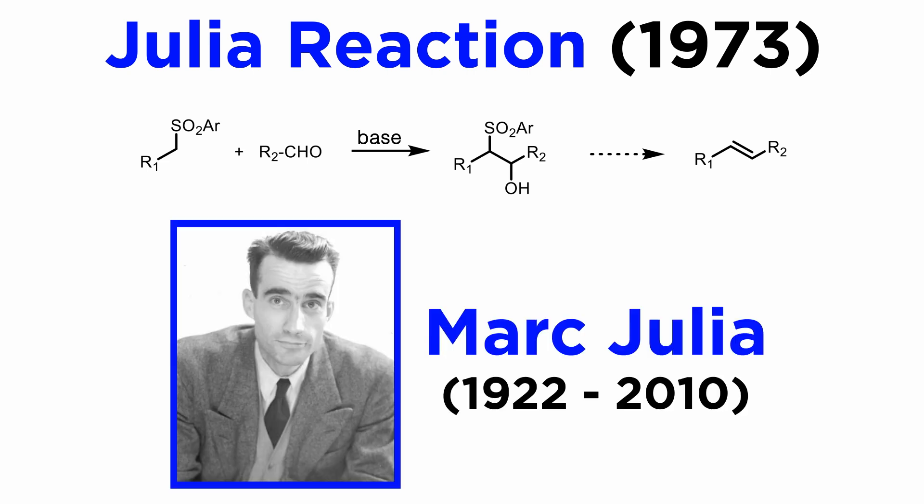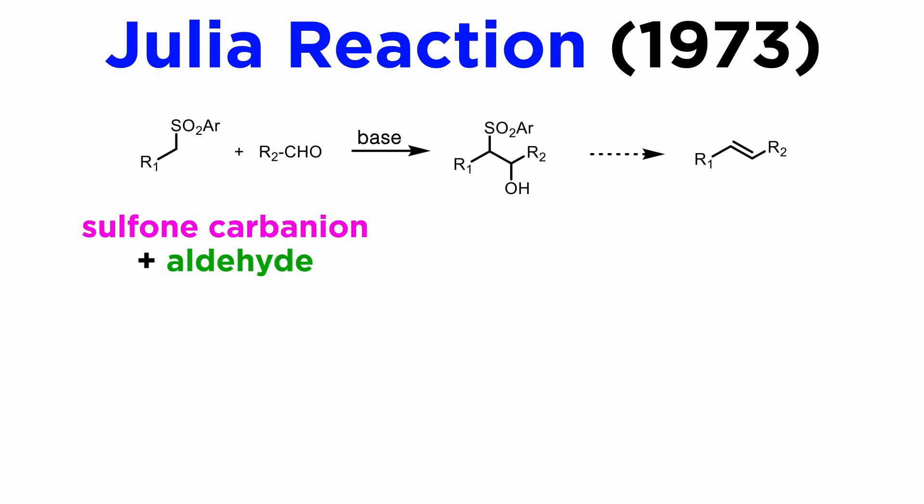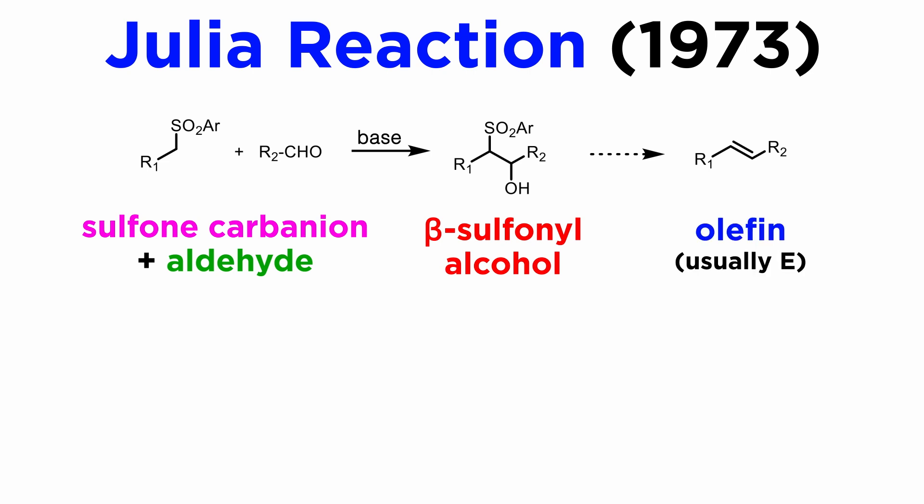The reaction was first reported by French chemist Marc Julia in 1973, and consists of the addition of a sulfone carbanion to an aldehyde. This generates a beta-sulfonyl alcohol, which can be reduced in a number of ways to yield an olefin, usually in the E form.